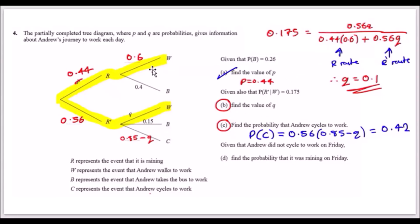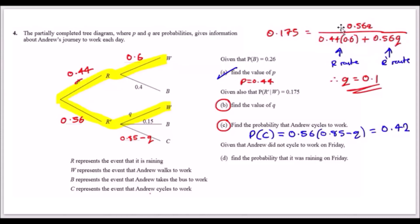Setting up the conditional probability: the not-R route through W uses the branch with probability 0.56 and q. Placing the not-R combination on the numerator and total W probability on the denominator, equate to 0.175 and solve the algebra to get q = 0.1.